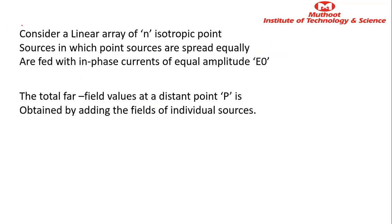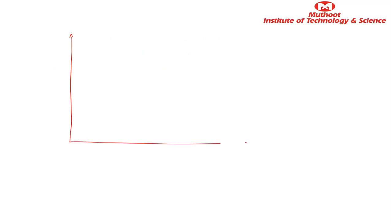The derivation begins from here. Consider a linear array of N isotropic point sources in which the point sources are spread equally and are fed with in-phase currents of equal amplitude E₀. Let's look at how the diagram is going to look — you draw the y-axis and the x-axis, then consider the other elements. We are doing this for N point sources, so N will be the number of elements.